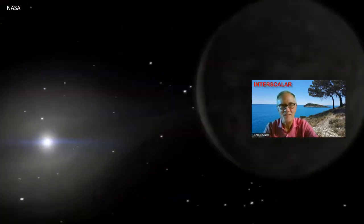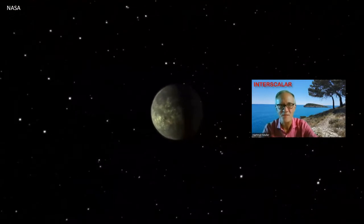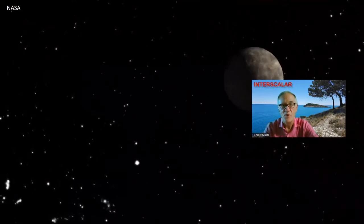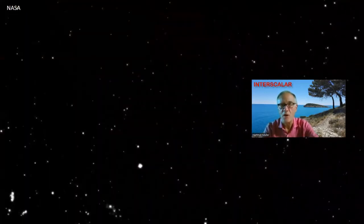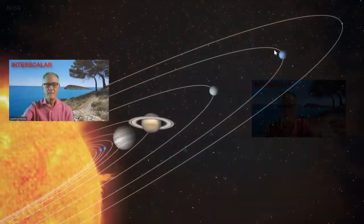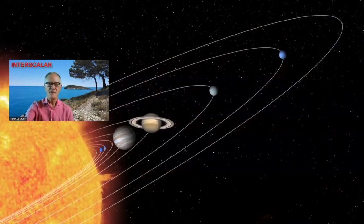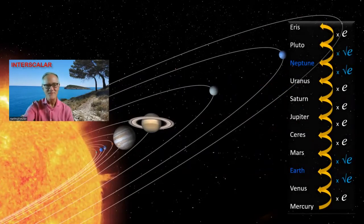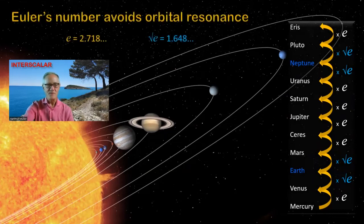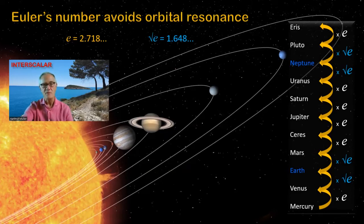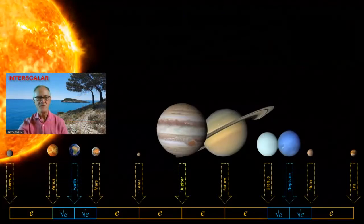Orbital resonance can excite, destabilize and even destroy a planetary system. This can happen when orbital periods approach simple integer ratios like one-half, two-third or three-fourth. This is why the orbital periods in the solar system are in irrational ratios. Euler's number, 2.718 — the base of natural logarithms — is not only irrational but transcendental, and that makes orbital resonance impossible. The natural logarithmic scale evidences the scale invariance of the solar system.